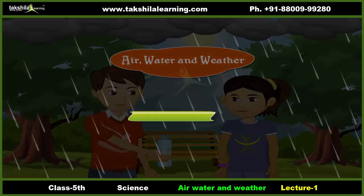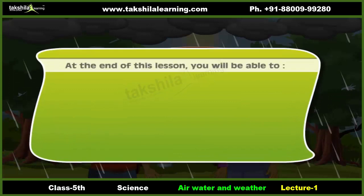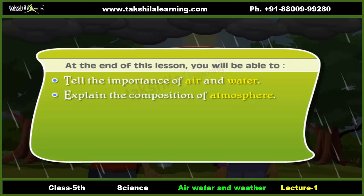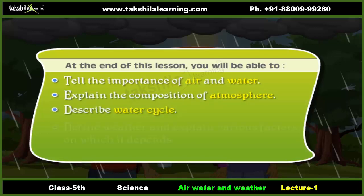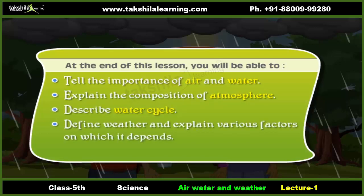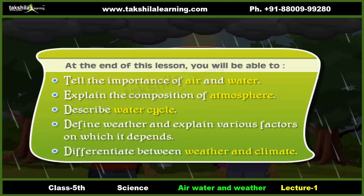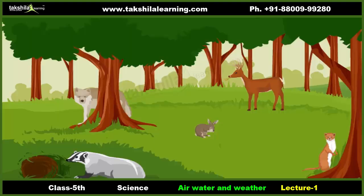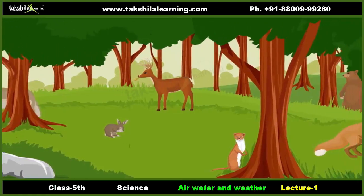Objectives: At the end of this lesson you will be able to tell the importance of air and water, explain the composition of atmosphere, describe the water cycle, define weather and explain various factors on which it depends, and differentiate between weather and climate.